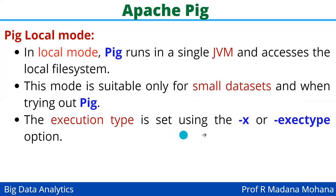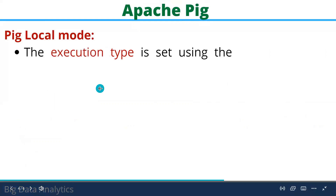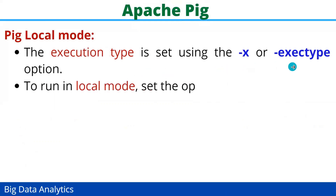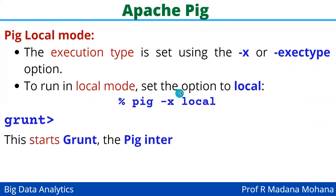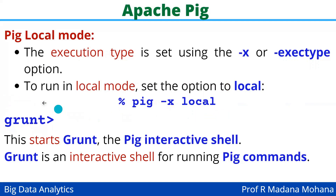The execution type is set using the command pig -x or pig -exectype option. To enter into Pig local mode, we use this command: in the terminal you can type 'pig -x local'. This will enter into the Pig local mode, which is called the grunt shell. This starts the grunt interactive shell.